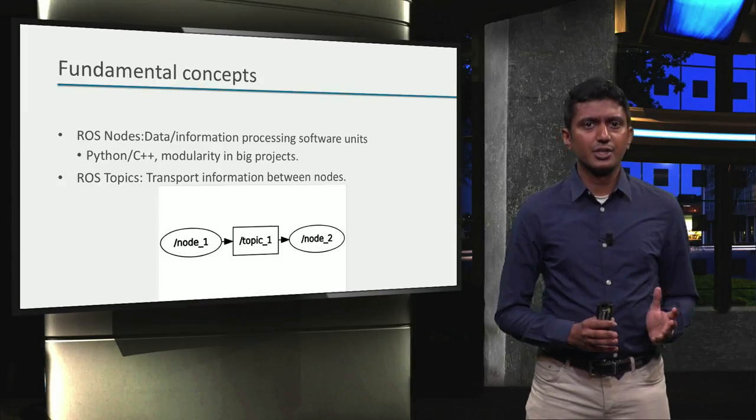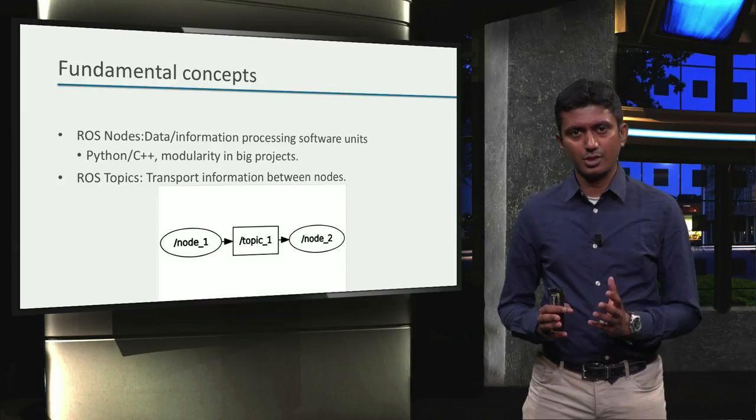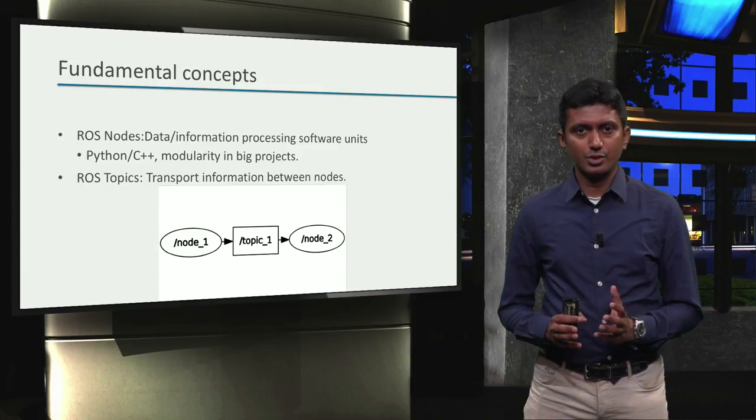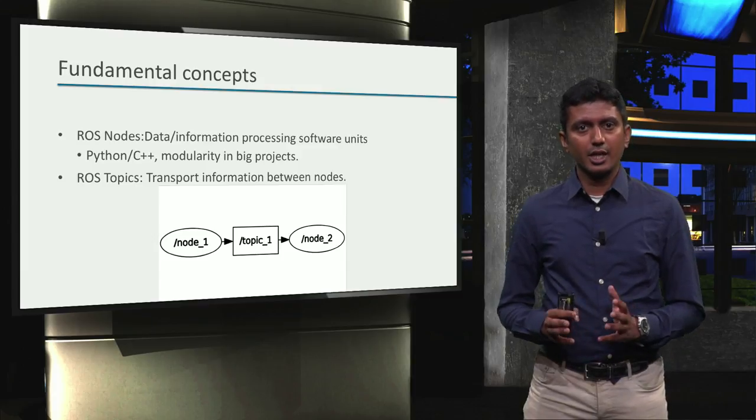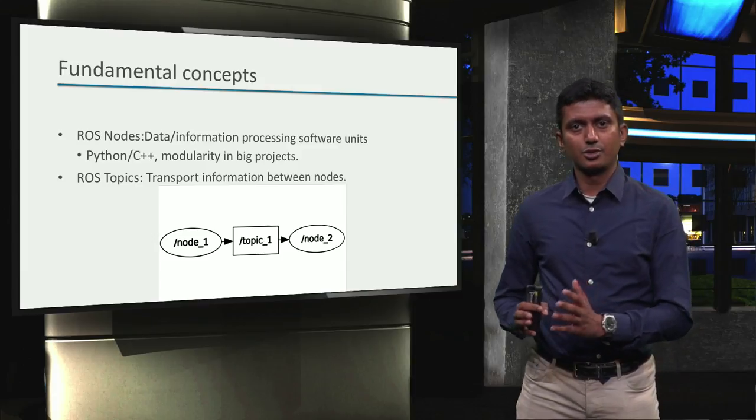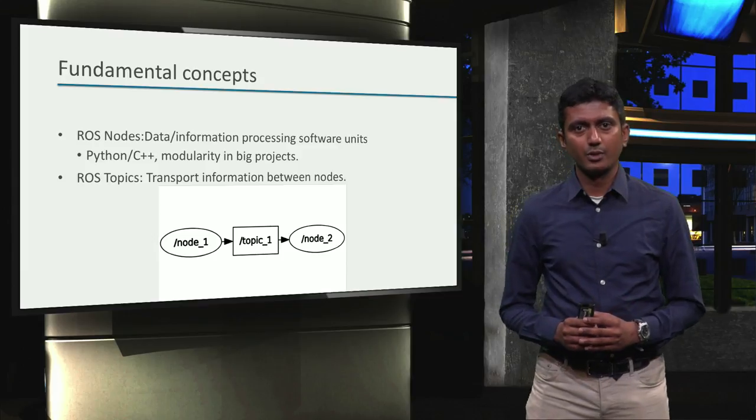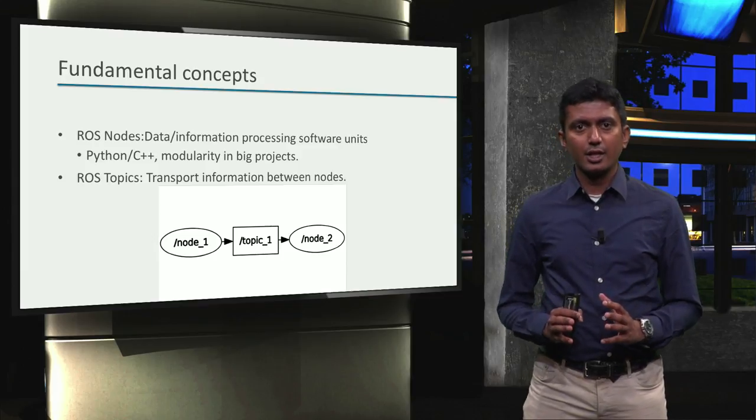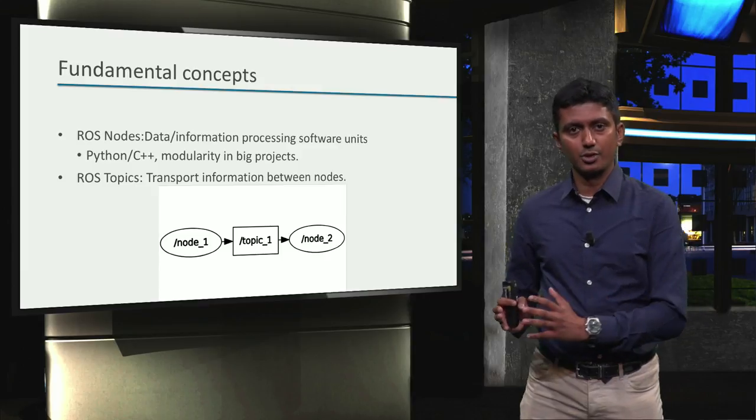Here is a graphical representation of the concepts of ROS nodes and ROS topics where two nodes in ellipsis are communicating with each other via a ROS topic in the rectangular box. We will revisit this graphical representation in further detail in the next module.